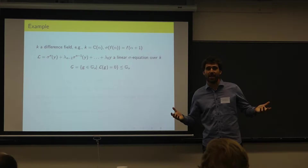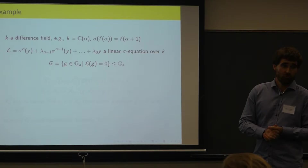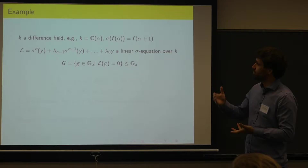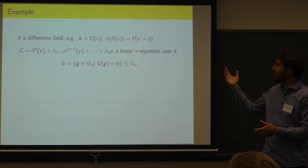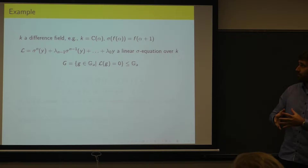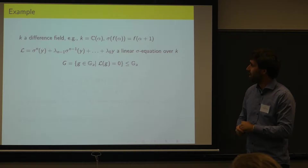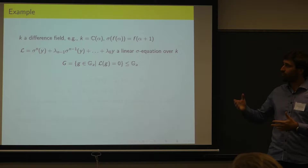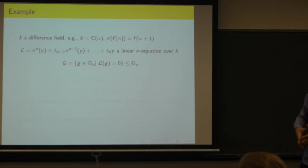Let's fix a difference field — just any field with an endomorphism. For example, you can take the field of rational functions in a variable alpha, and the endomorphism, which we always call sigma, is the shift on alpha. Let's look at a linear difference equation over that difference field. The solution set — all solutions of that linear difference equation — is naturally a subgroup of the additive group. That's the first example of a group defined by a difference equation, what we call a difference algebraic group.